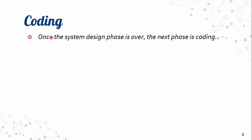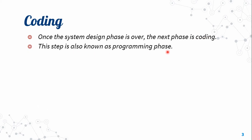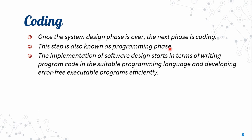Coding. Once the system design phase is over, the next phase is coding. This step is also known as the programming phase. The implementation of software design starts in terms of writing program code in the suitable programming language and developing error-free, executable programs efficiently.